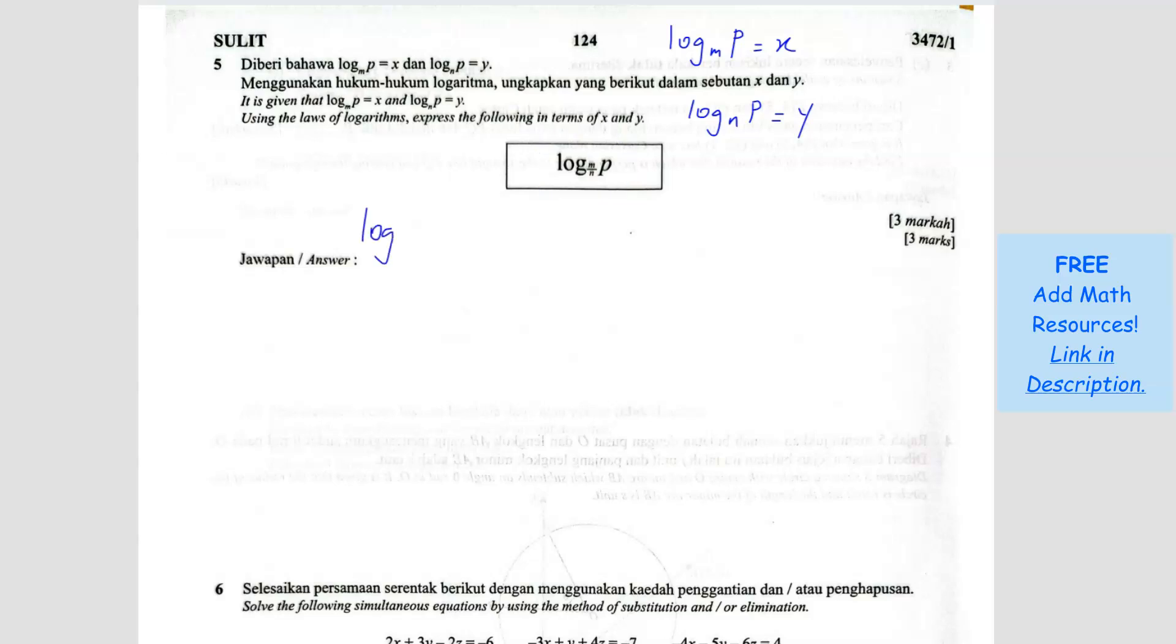So log P base M over N. The first step we're going to do is, you see we can't really do much here because the M over N is at the base. So it's hard for us to just break it up.